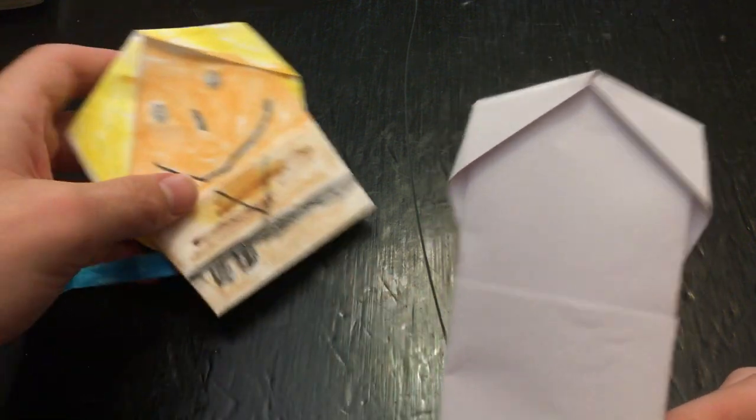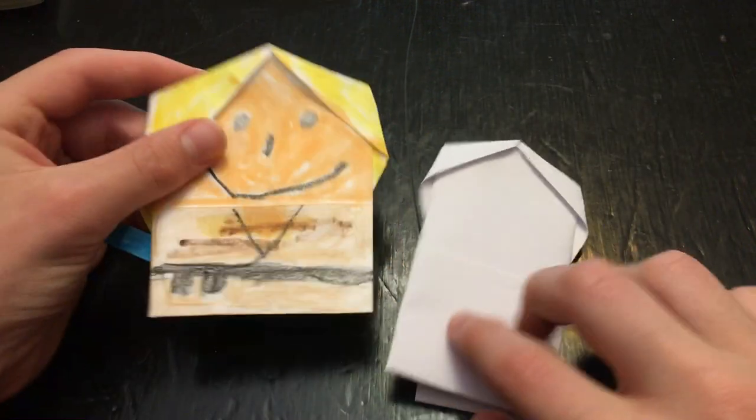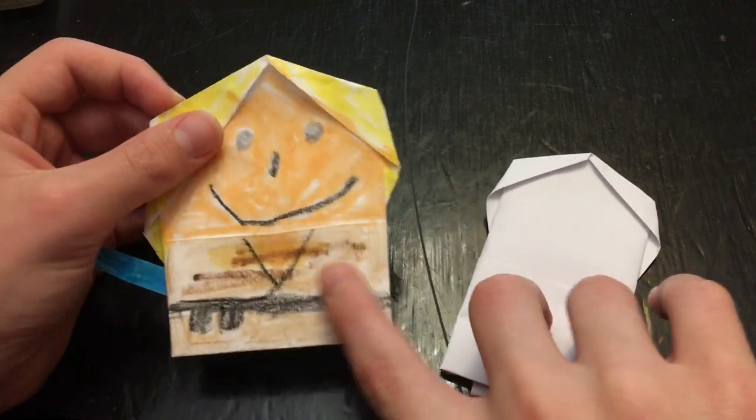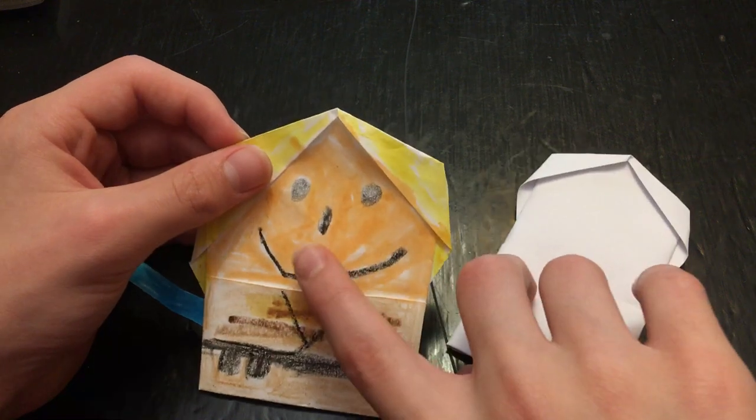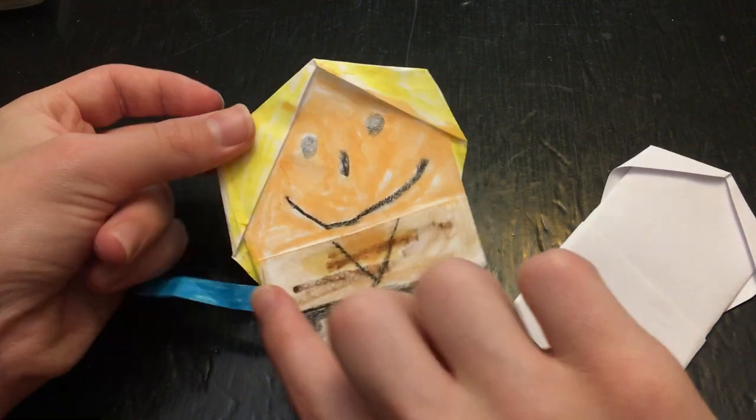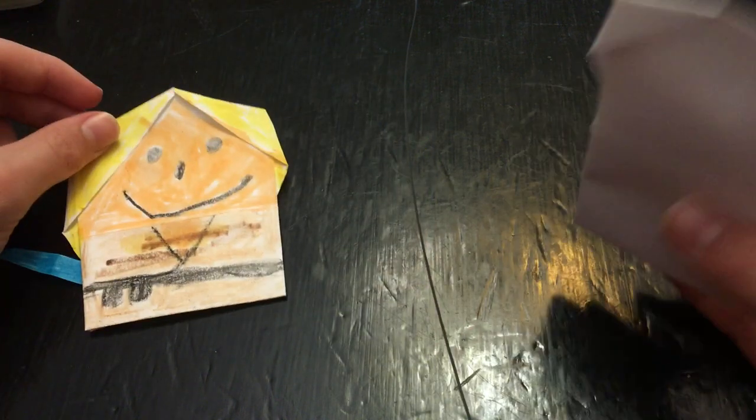To decorate it, all you gotta do is draw a shirt, color this area brown, make a belt with two pouches, a face, color the face, color his hair, and draw a blue lightsaber, and you've got Luke.